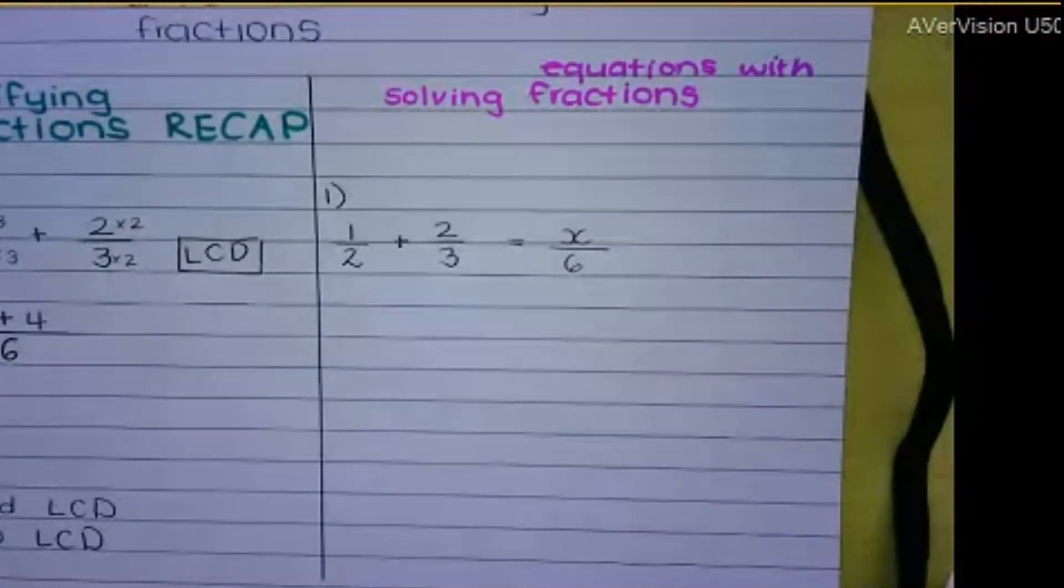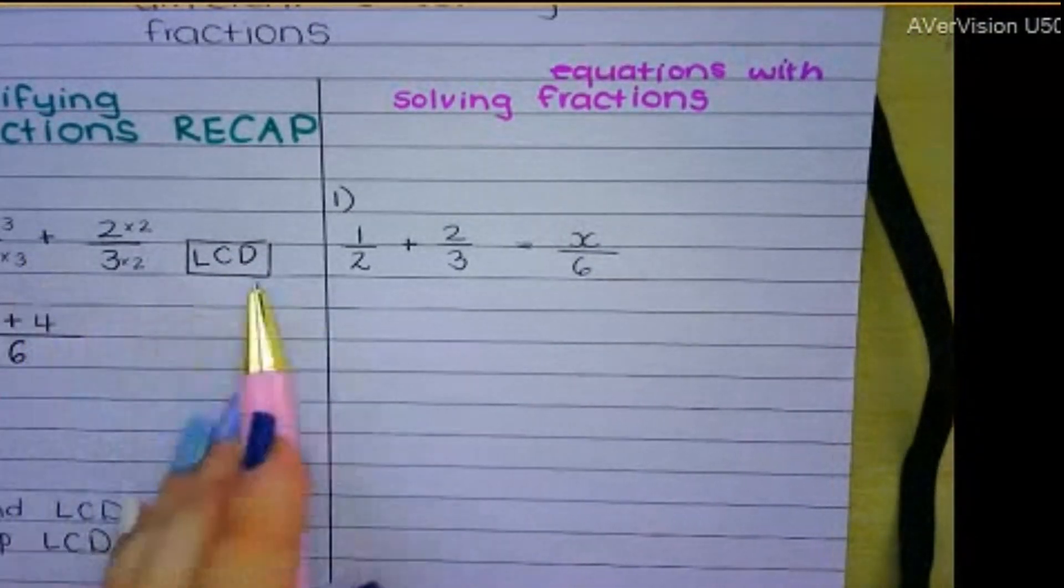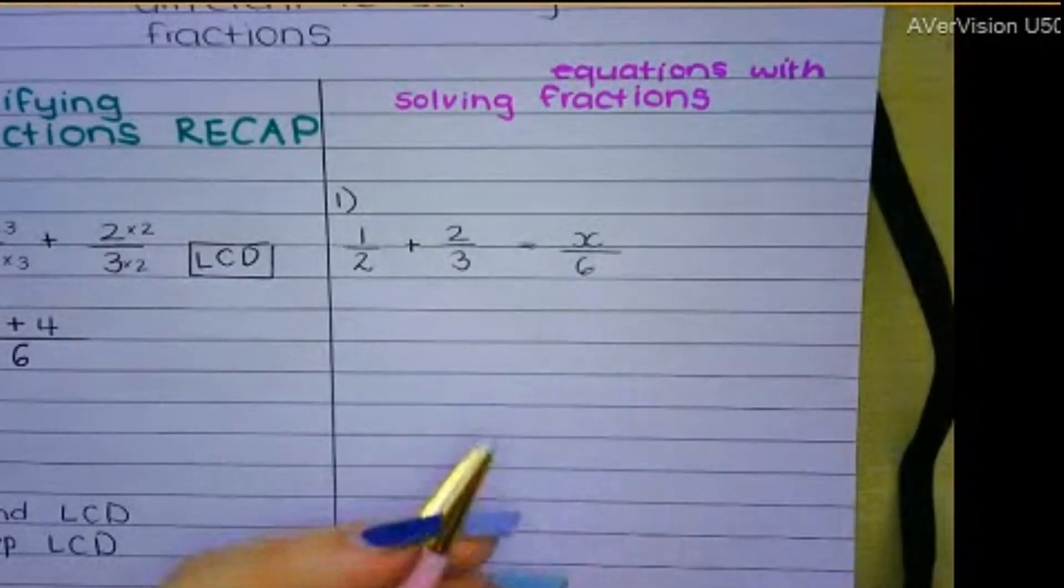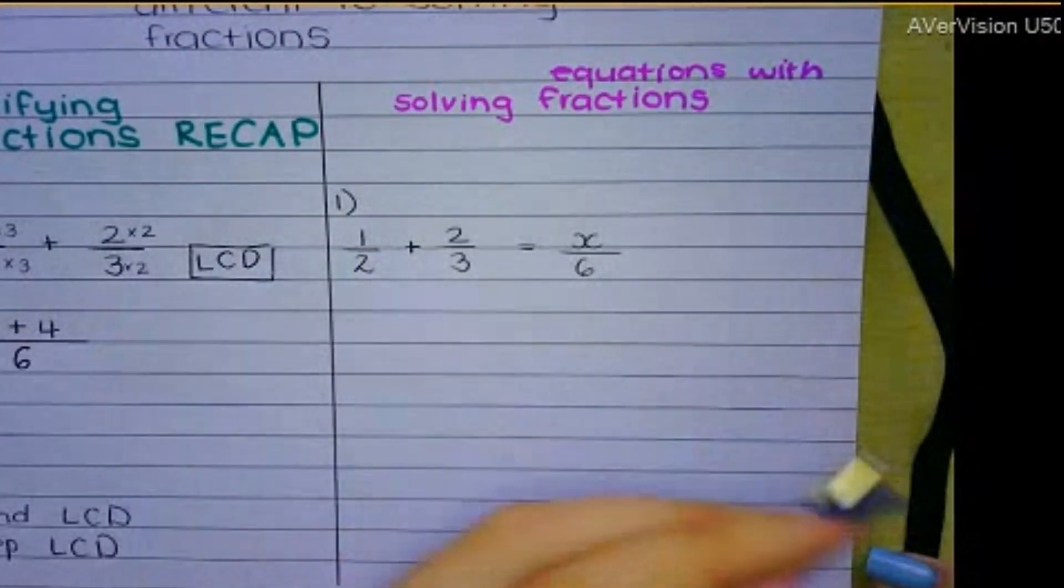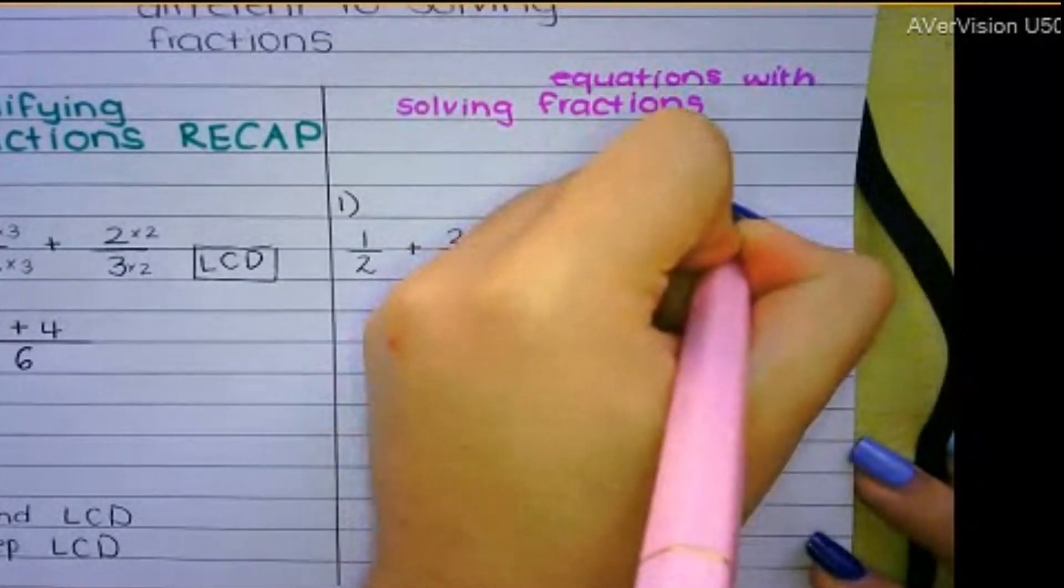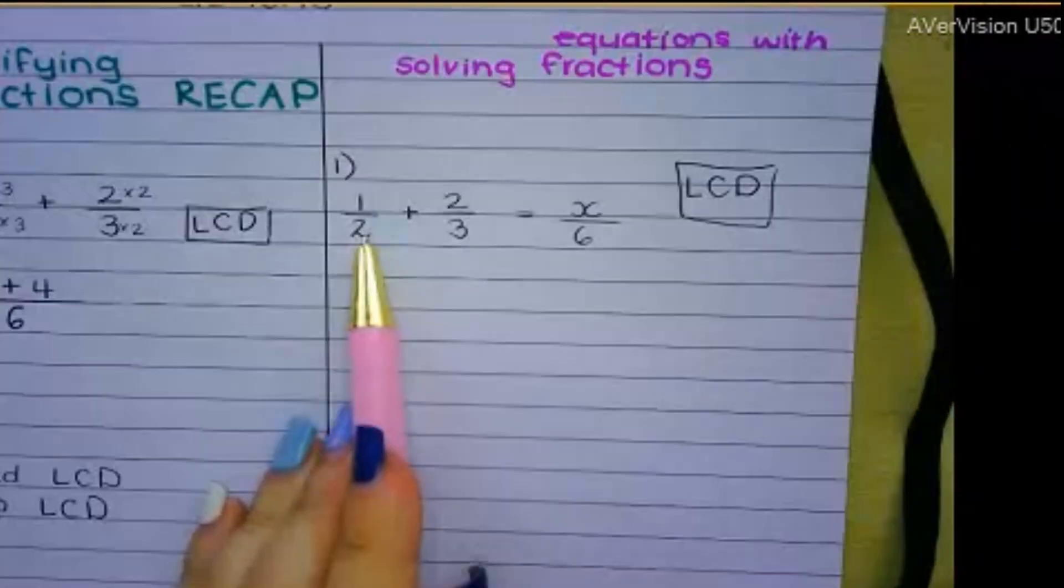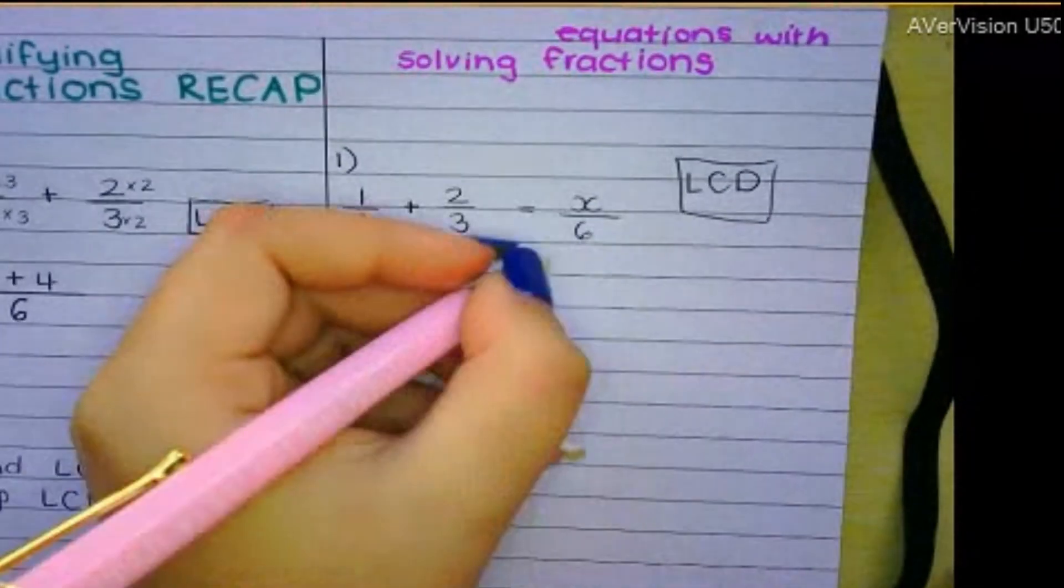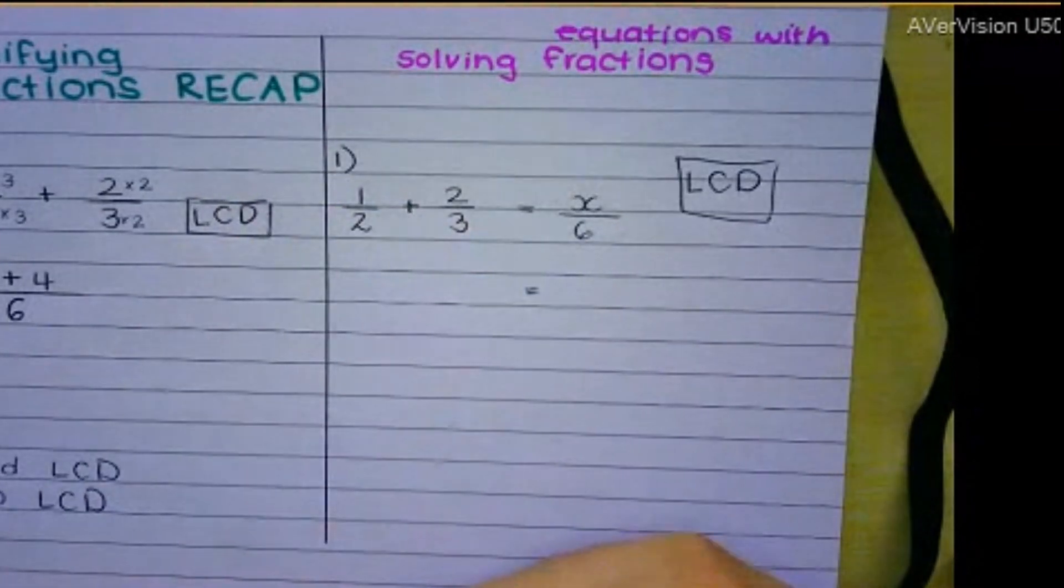Let's just look at how I would solve this. So similar, you can see I chose a similar sum. A half plus 2 over 3 equals x over 6. So I kept it very simple. What I need to do still is I need to find the LCD. So what number can 2, 3, and 6 go into? The lowest one that's common. And the answer is still 6.